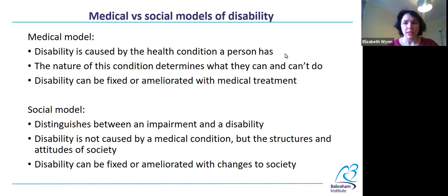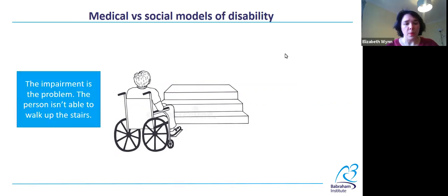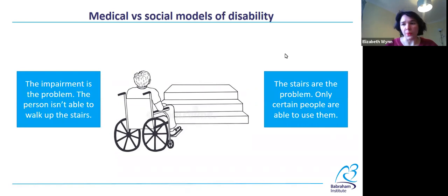Let's look at an example. Here's a person using a wheelchair at the bottom of a set of stairs. In the medical model, the impairment is the problem — the person isn't able to walk up the stairs. In the social model, the stairs are the problem. Only certain people are able to use them.